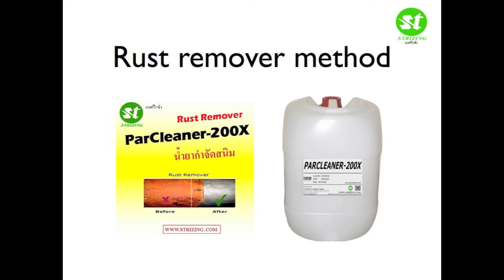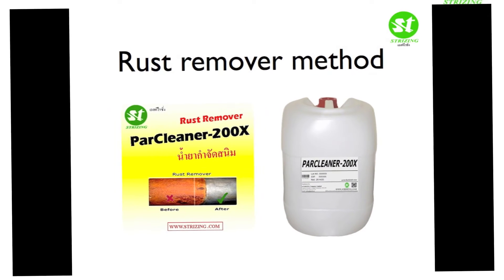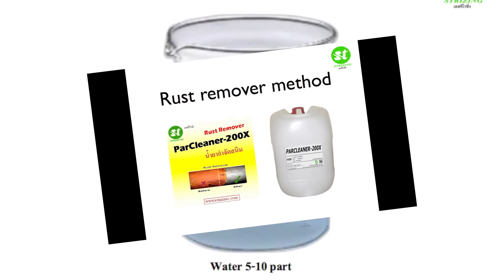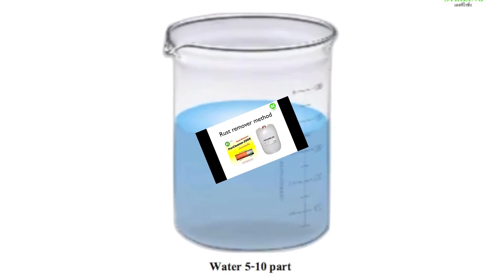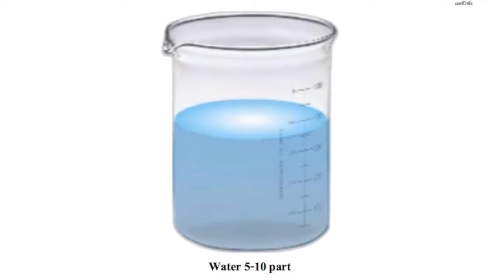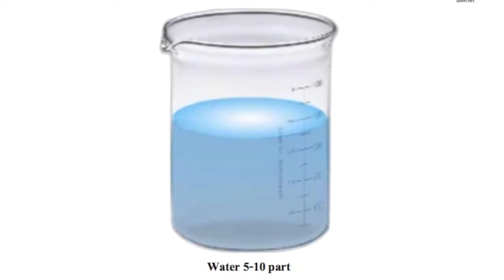Welcome to Strizing Tech Video Demonstration using chemical rust remover ParCleaner 200X. Use 5 to 10 parts water to mix the solution.